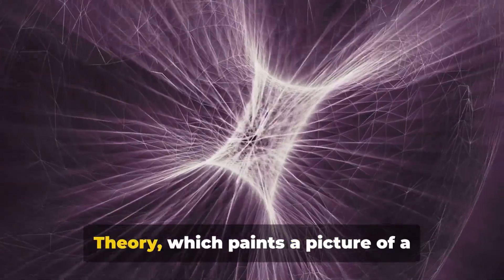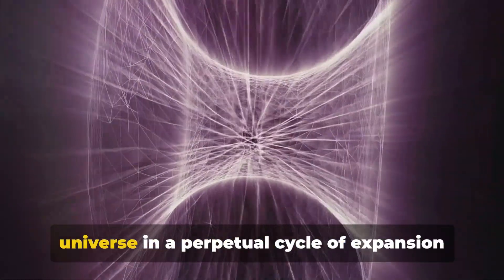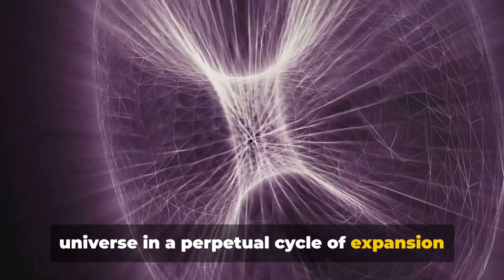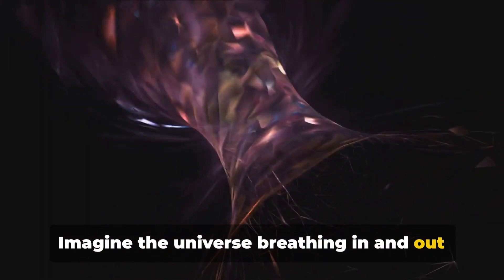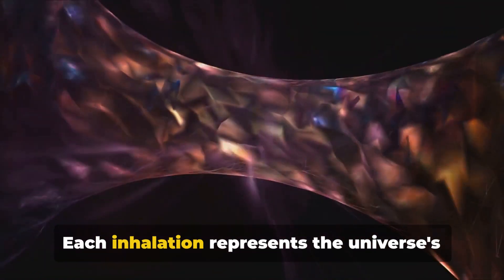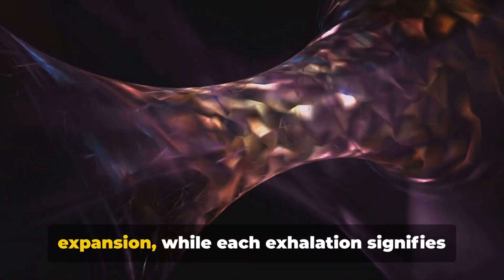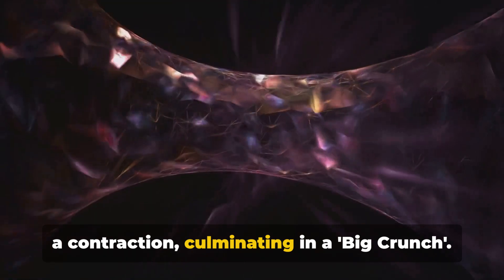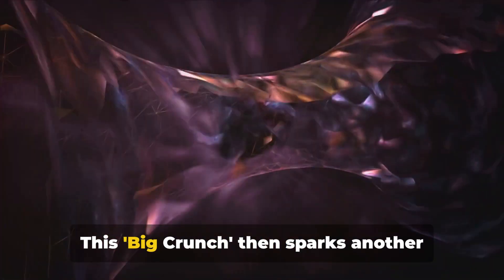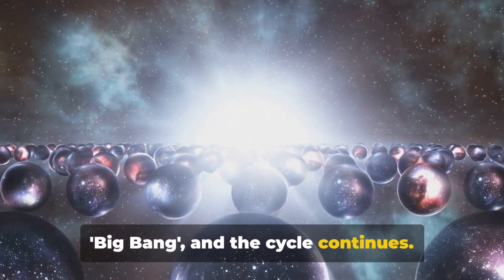Next, we have the oscillating universe theory, which paints a picture of a universe in a perpetual cycle of expansion and contraction. Imagine the universe breathing in and out over eons. Each inhalation represents the universe's expansion, while each exhalation signifies a contraction, culminating in a big crunch. This big crunch then sparks another Big Bang, and the cycle continues.